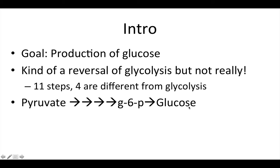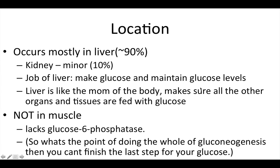And then we end up with glucose. Now let's talk about where it happens. The location — it occurs mostly in the liver, about 90%, and then minorly in the kidney, about 10%.